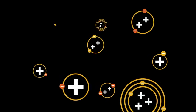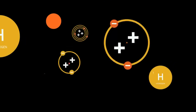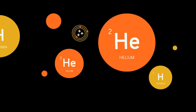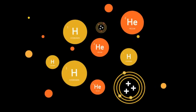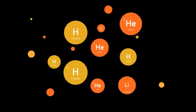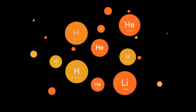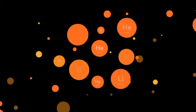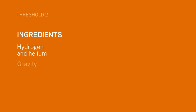Very simple ones like hydrogen, some helium, and a few slightly heavier atoms thrown in for good measure. The universe now contained vast clouds of these atoms. Add gravity, and now you have the ingredients for our second threshold: the formation of stars.